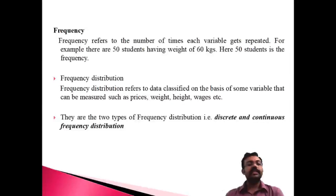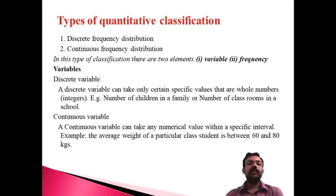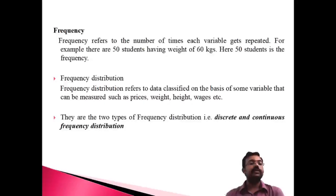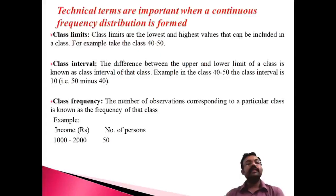In discrete frequency distribution, the variable takes values without a class interval with corresponding frequency. In continuous frequency distribution, there is a class interval and corresponding frequency. These are the two important elements — variable and frequency. The discrete variable states specific values like 1, 2, 3, 4, while the continuous variable uses class intervals such as 10 to 15 or 60 to 80.